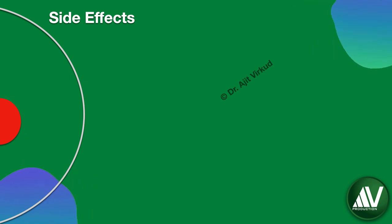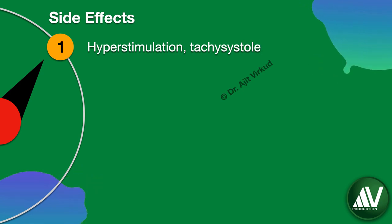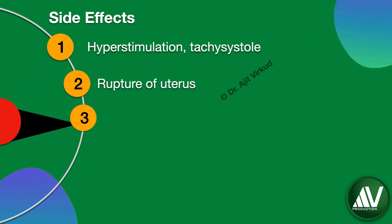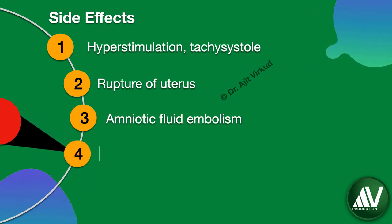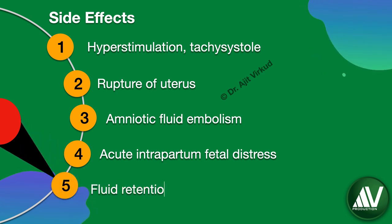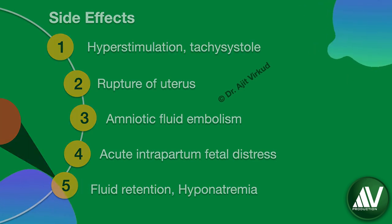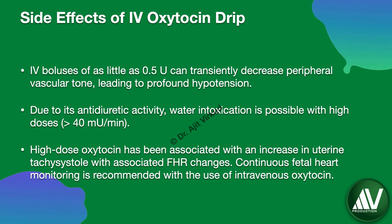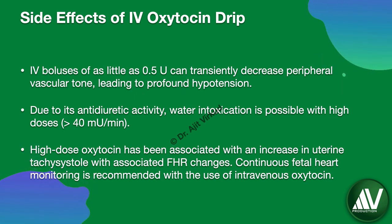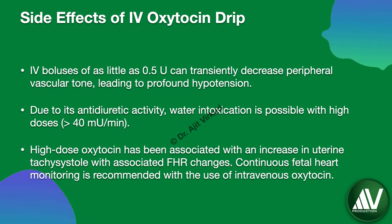Since oxytocin is used in labor, side effects on both mother and fetus must be considered. Maternal side effects include hyperstimulation, tachysystole, rupture of uterus, amniotic fluid embolism, acute intrapartum fetal stress, and fluid retention if used in high doses. Intravenous boluses of as little as 0.5 units can transiently decrease peripheral vascular tone leading to profound hypotension. Due to its antidiuretic activity, water intoxication is possible with high doses greater than 40 mIU per minute. High-dose oxytocin has been associated with uterine tachysystole with associated fetal heart rate changes, and continuous fetal heart rate monitoring is recommended.